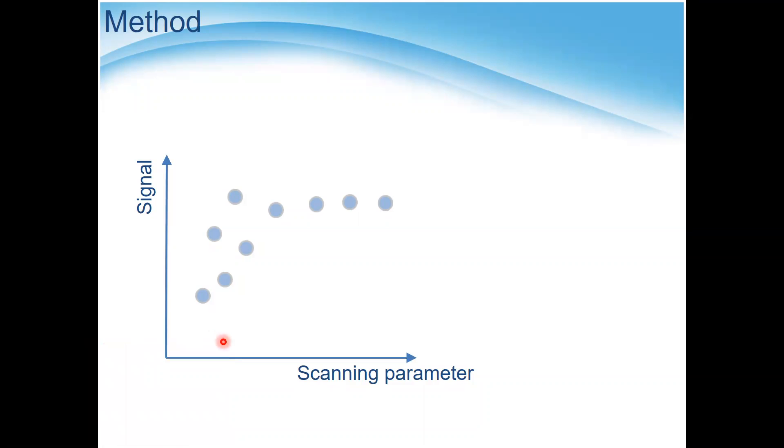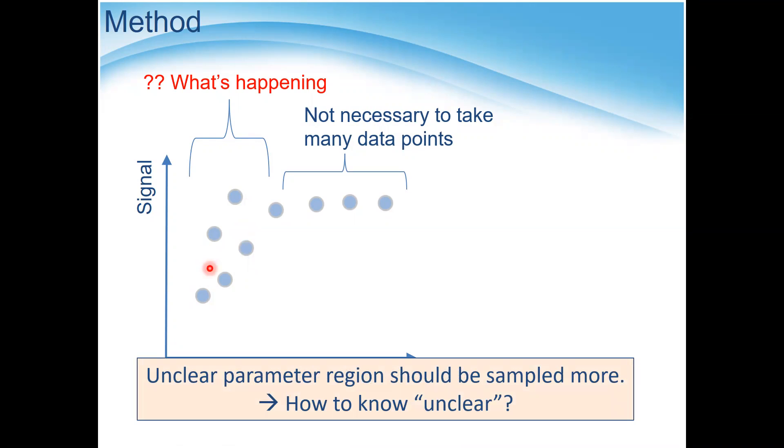Here's a lesson when we have a scanning parameter and some signal depending on the scanning parameter like this. Looking at the signal, around this parameter range it seems the signal is saturated and not necessary to take many data points around here. But in this region, the signal is still fluctuating and we are not sure what's happening here. We want to measure more, sample more around here.